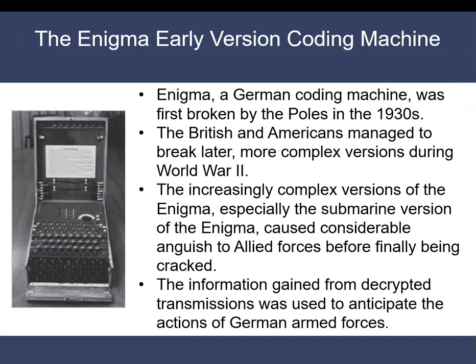This is an earlier version of the German coding machine called Enigma. The Enigma machine shown in the picture is a cipher device developed and used in the early to mid-20th century to protect commercial, diplomatic and military communication. It was used by the Germans during World War Two to send encrypted top-secret messages. The code for this machine was broken first by the Poles back in the 1930s. The increasingly complex versions of the Enigma caused considerable difficulties to allied forces before finally being cracked. The information gained from decrypted transmissions was used to anticipate the actions of German armed forces.